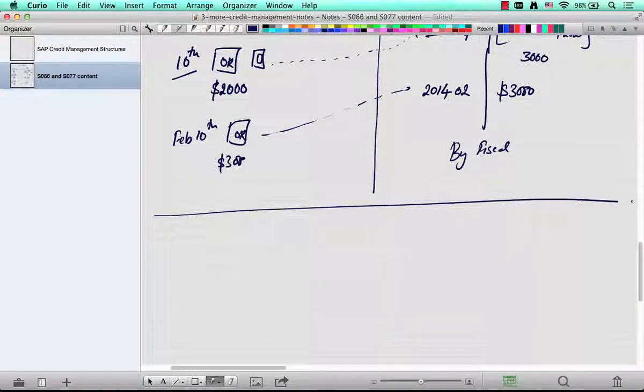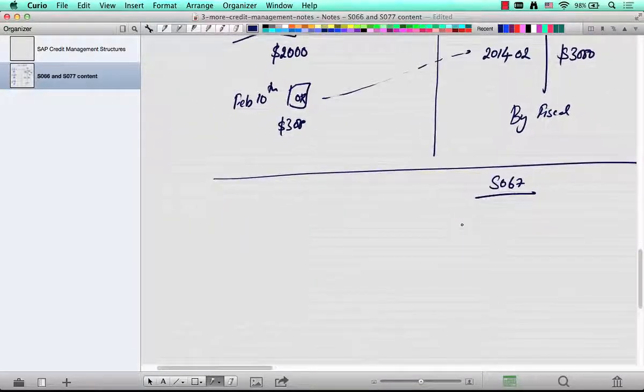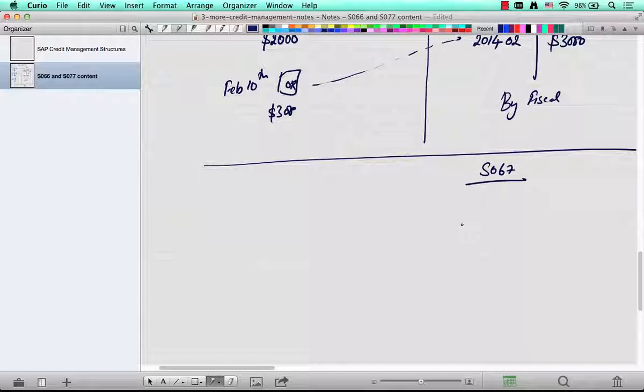What about S067? What does that contain? This is even more involved. Let's say, let's take the same order.